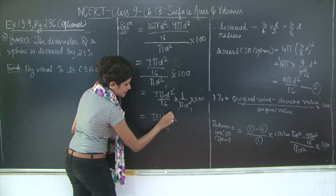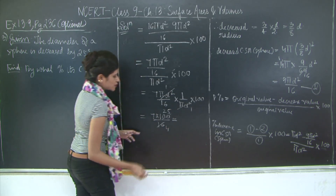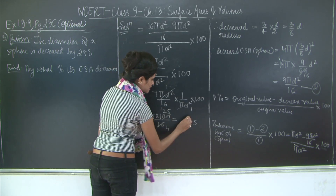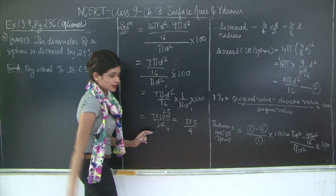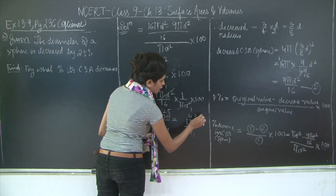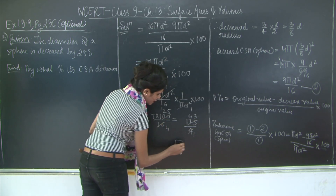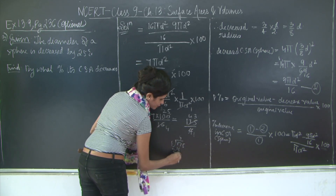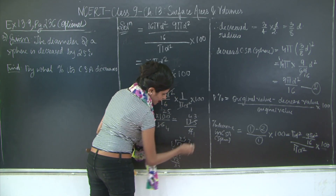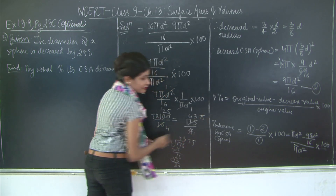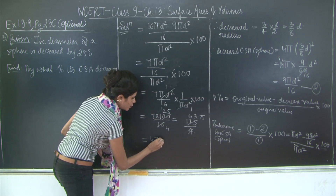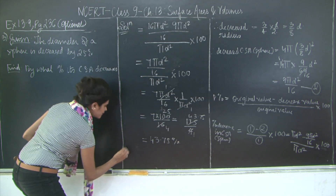Simplifying 700/16: dividing both by 4 gives 175/4, which equals 43.75. So the percent decrease in curved surface area is 43.75%.